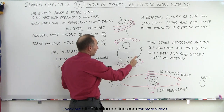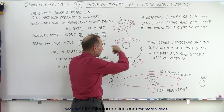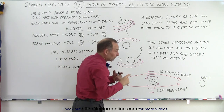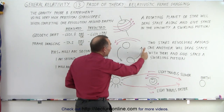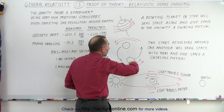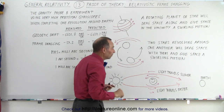For example, if you have two stars revolving around one another in a binary star system, they will drag space along with them as they revolve around the barycenter.